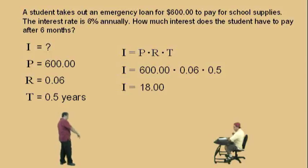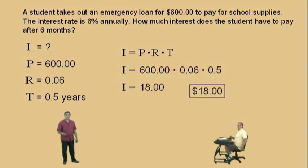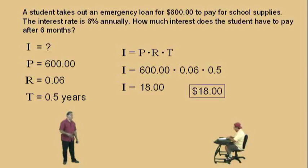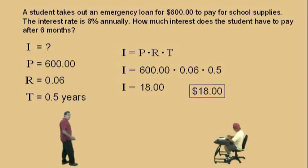The product is $18. So after six months, the student has to pay $18 in interest — $618 total to pay off that loan. Because the student has to pay $18 of interest — that's what we just calculated.